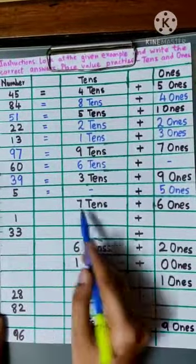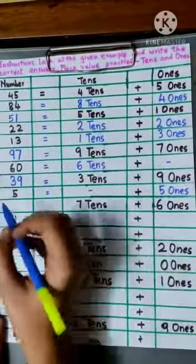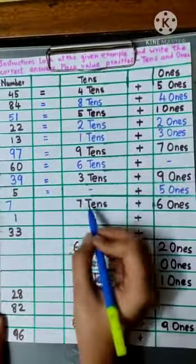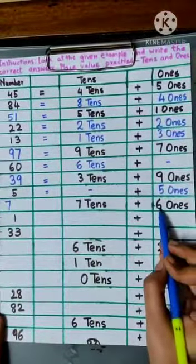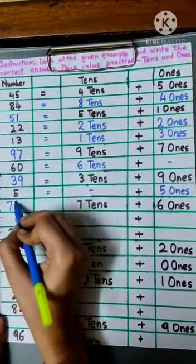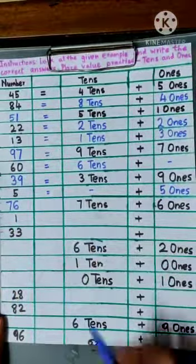Now, there is 7 tens and 6 ones. So number would be 7, and now we have to write 6 ones, so we will write 6. The number is 76.